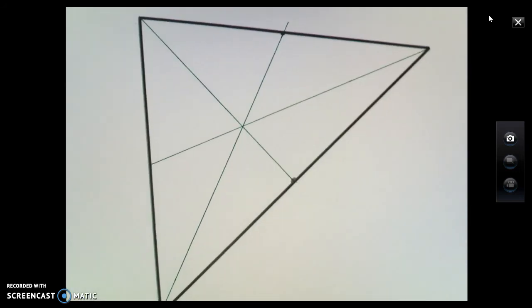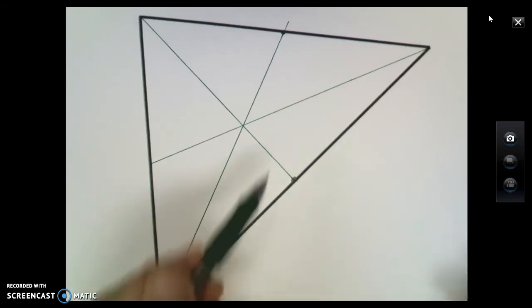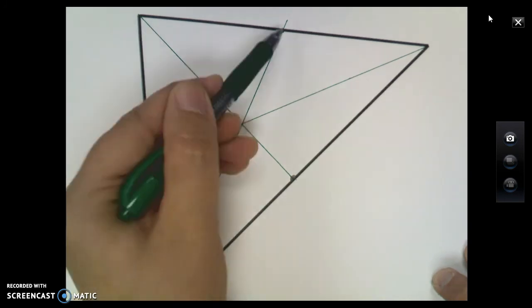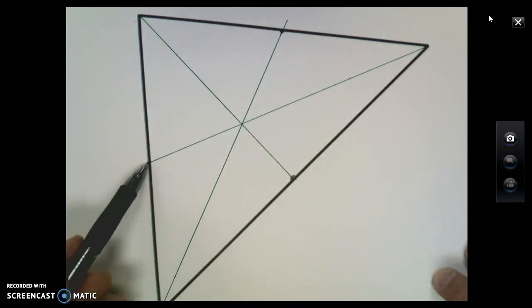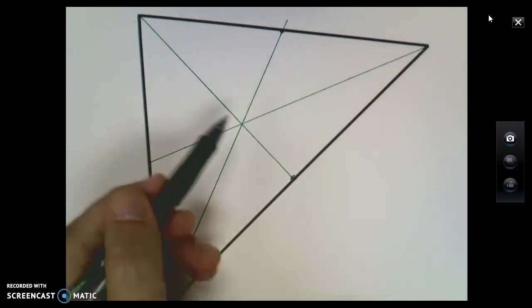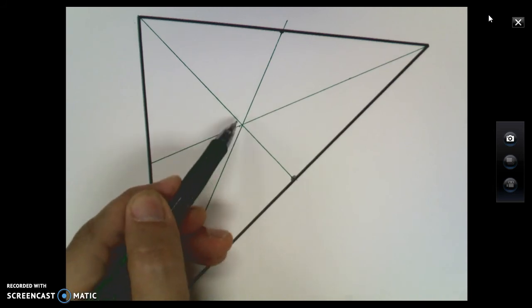So if I turn my triangle back around, here I have all my medians drawn. Midpoint to vertex, midpoint to vertex, and midpoint to vertex. They all are meeting in the same place once again.